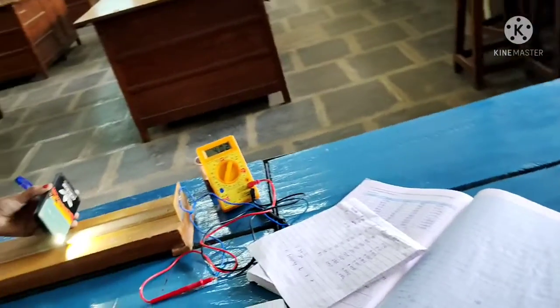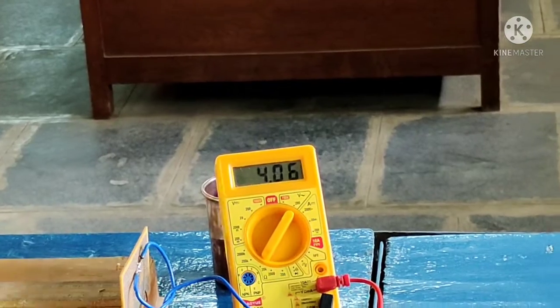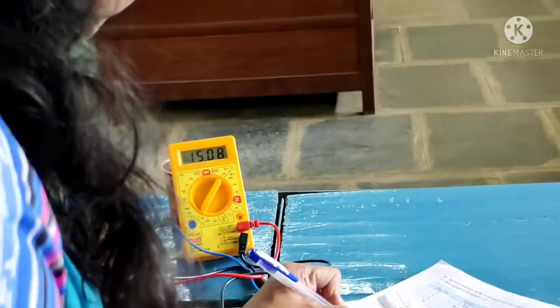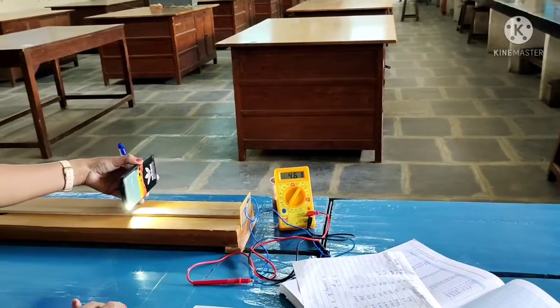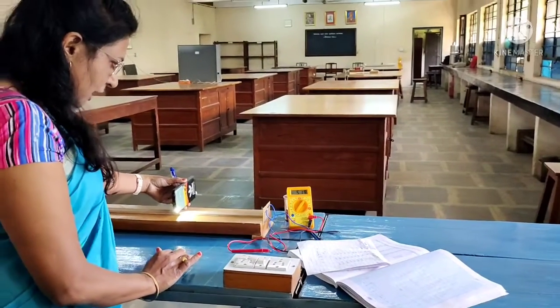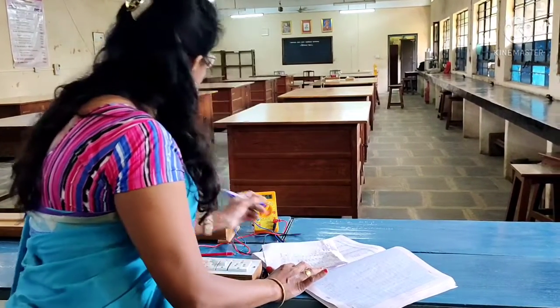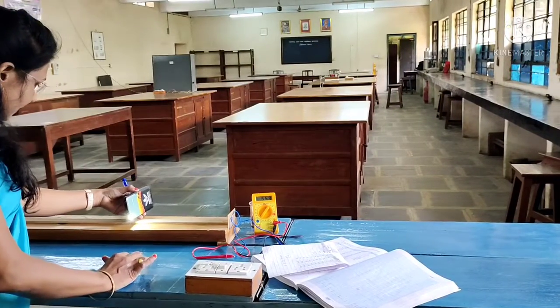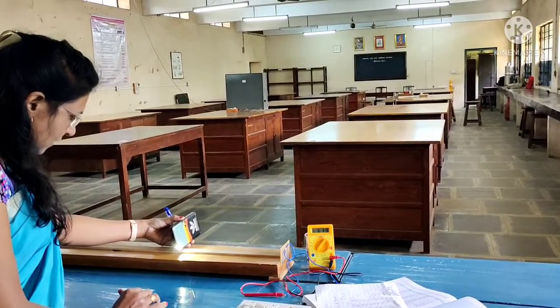Next here for 20 centimeter, reading is coming 3.92. For 20, then for 25 it is coming 5.18.